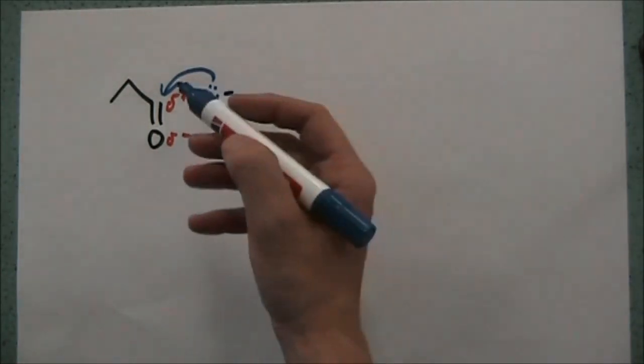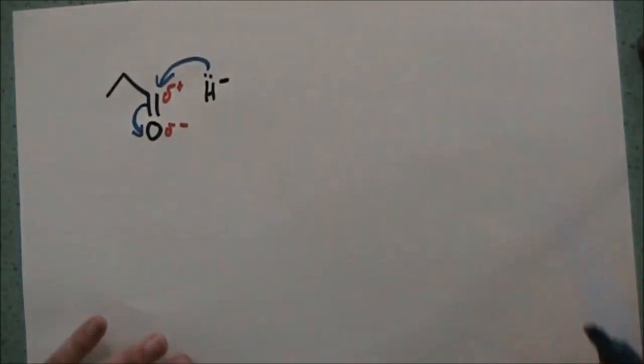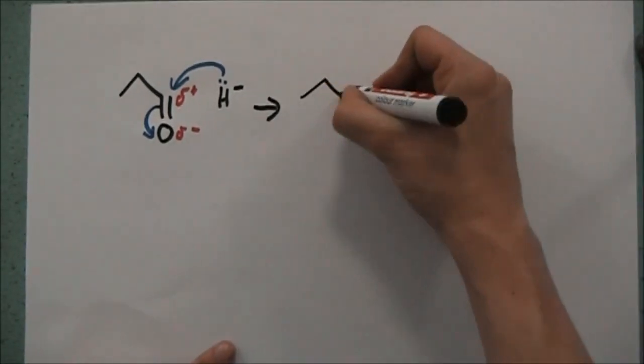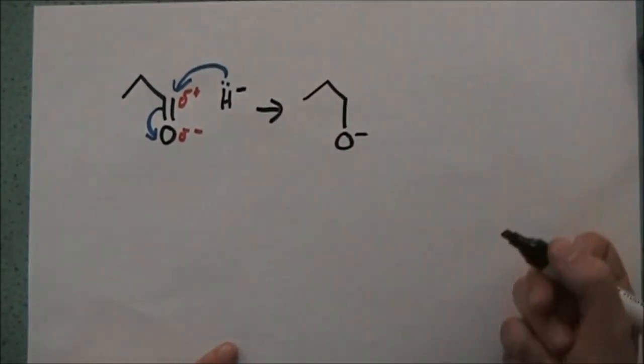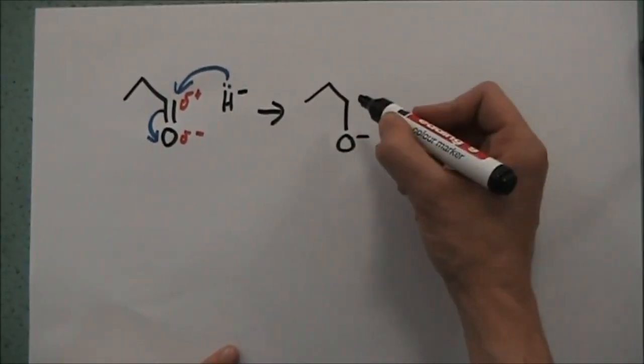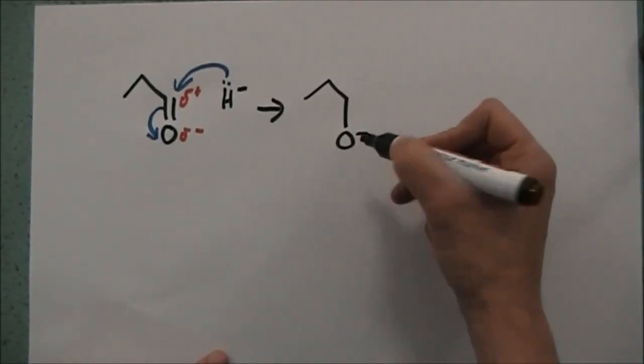And the effect of that attack is that we're going to knock these electrons and this bond onto the oxygen. That will give us O minus group on here, the hydrogen's going to go on there, because I'm doing it in skeletal formula, I don't actually have to mark that on. But we're going to end up with this O minus here.